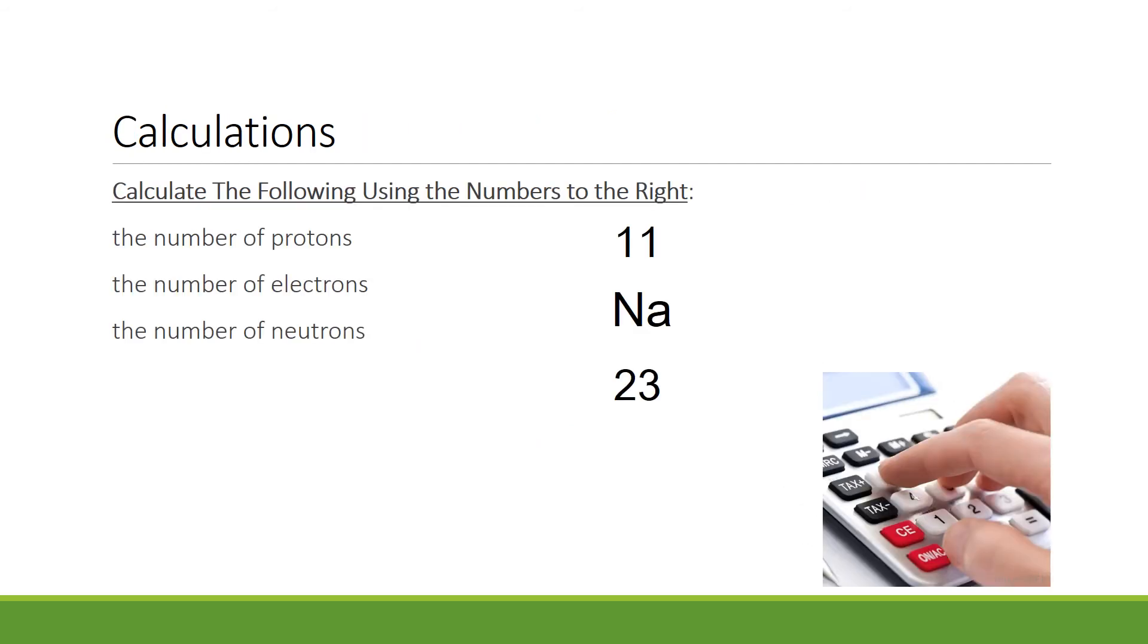Here is the chemical symbol for sodium, capital N, small A. This comes from the Latin name natrium. I want you to be able to calculate the following numbers: the number of protons, the number of electrons, and the number of neutrons. See if you can do this before I give you the answer.